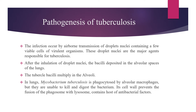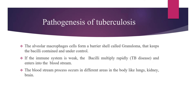Pathogenesis of tuberculosis. The infection occurs by airborne transmission of droplet nuclei containing a few viable cells of the virulent organism. These droplet nuclei are major agents responsible for tuberculosis. If the infected droplets are inhaled by a normal person, the bacilli deposit in the alveolar spaces of the lungs and start to multiply in the alveoli. In the lungs, Mycobacterium tuberculosis is phagocytosed by alveolar macrophages, but they are unable to kill and digest the bacteria as the cell wall prevents the fusion of the phagosome with the lysosome, which contains host antibacterial factors. The alveolar macrophages form a barrier called granuloma that keeps the bacilli under control. If the immune system is weak, the bacilli multiply rapidly and enter the bloodstream, which is called TB disease, spreading to different areas of the body like lungs, kidney, and brain.